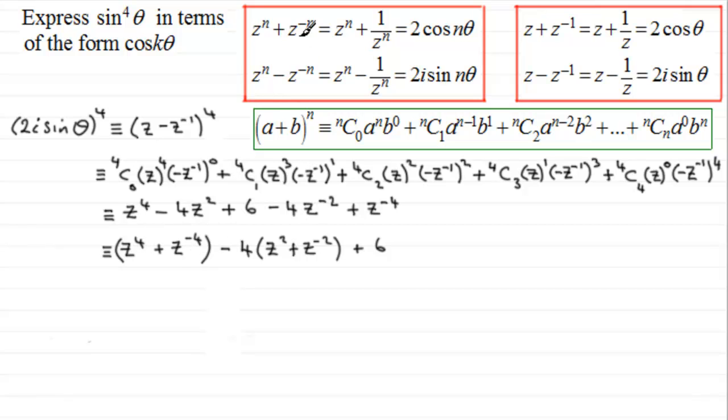Now with this one, the z to the power four plus z to the minus four has this pattern structure, and n is clearly four, so it's going to give us two cos four theta. And then for this one, z squared plus z to the minus two is this identity again when n is equal to two, so that's going to give us two cos two theta. If I times it with the four, I'm going to get minus eight cos two theta, and then we've got the constant on the end plus six.